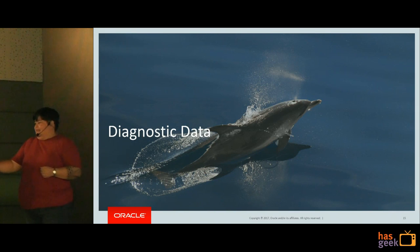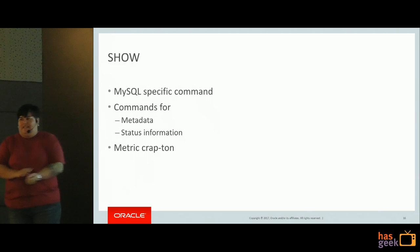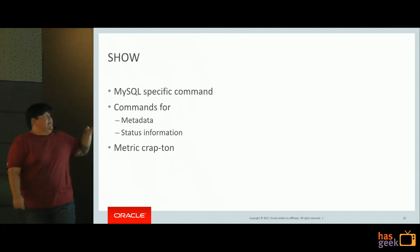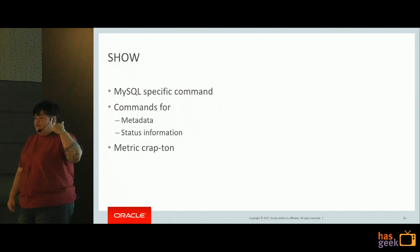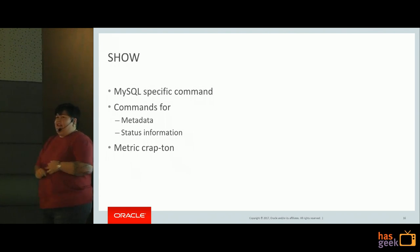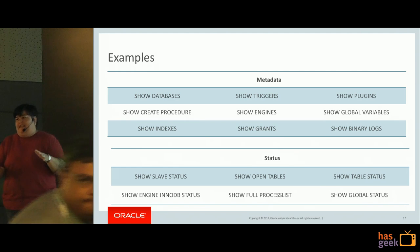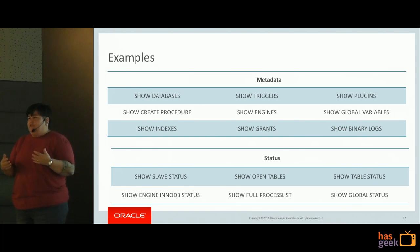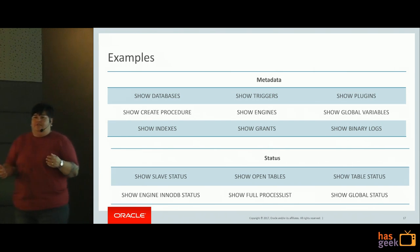Next: diagnostic information. As a DBA you're going to want to collect diagnostic information about your system. MySQL has what's called the SHOW command - a specific MySQL command to get information about the MySQL system. You have commands using SHOW to collect metadata information as well as server status information, and there are a metric ton of them. For example: SHOW DATABASES, SHOW TABLES, SHOW CREATE TABLE, SHOW GRANTS, SHOW INDEXES.